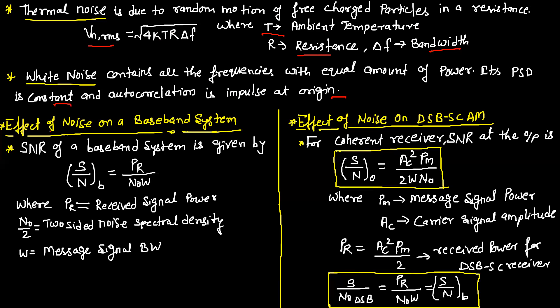Our next topic is the effect of noise on a baseband system. The SNR of a baseband system is given by S/N = PR / (N0·W), where PR is the received signal power, N0/2 is the two-sided noise spectral density, and W is the message signal bandwidth.